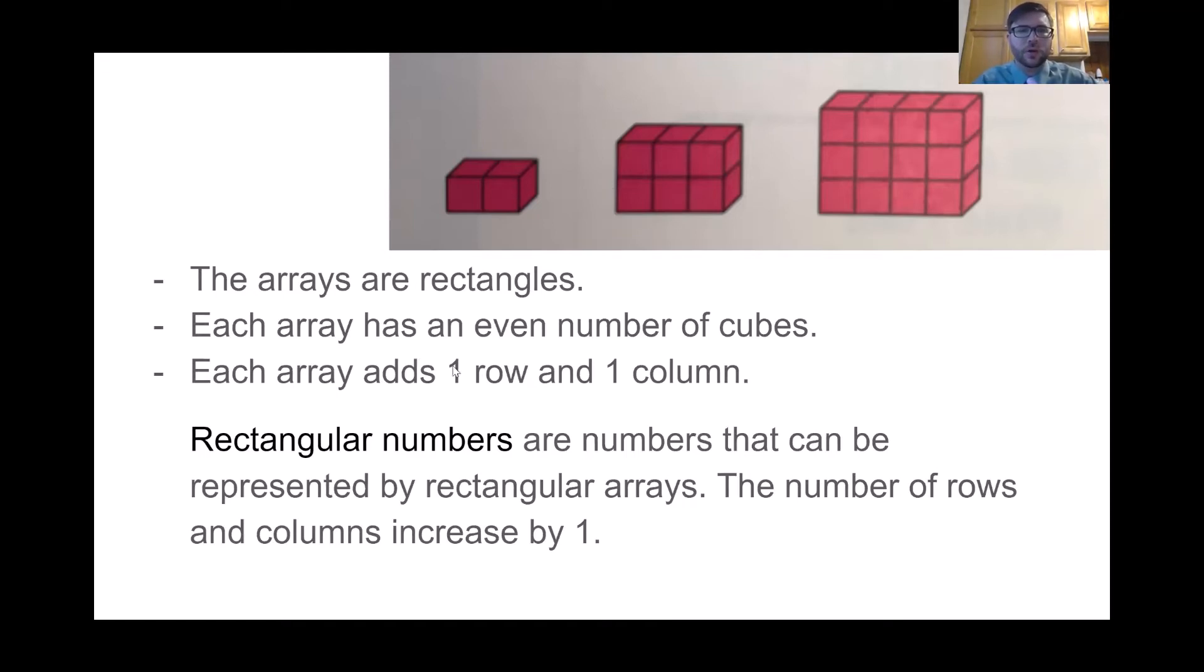And each array adds one row and one column. So we have two to start here. We add one and we add another column. One, two, four. Another column on top. That's all true. So rectangular numbers are numbers that can be represented by rectangular arrays. The number of rows and columns increase by one.